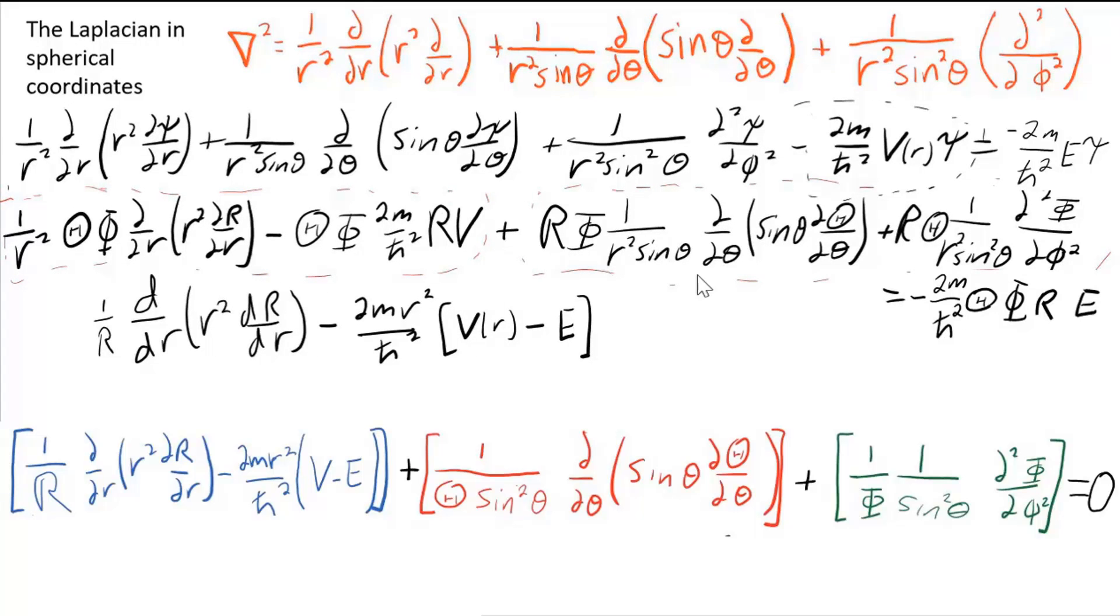The next two terms have to add up, apparently, to a constant. The point is when you have two functions, one a function of R and one a function of theta and phi, both adding up to a constant, they have to be equal to the same constant. So I'm going to go ahead and just write equals some constant c.